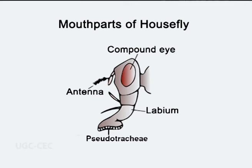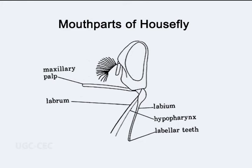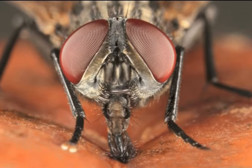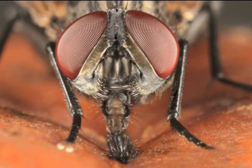Fifth is the housefly, whose proboscis shows a capillary mechanism. The labium is elongated and forms two lobes at the tip. These lobes have a series of fine tubes called pseudotrachea. The hypopharynx runs down the proboscis and digestive juices pass down onto the food, making it into a liquid. This liquid is then drawn up the pseudotrachea by capillary action.